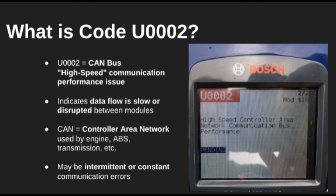Hey everyone, welcome back. In this video, we're going over DDC U0002, which refers to a performance issue with the high-speed communication bus.